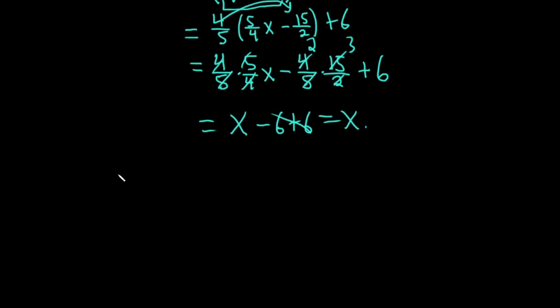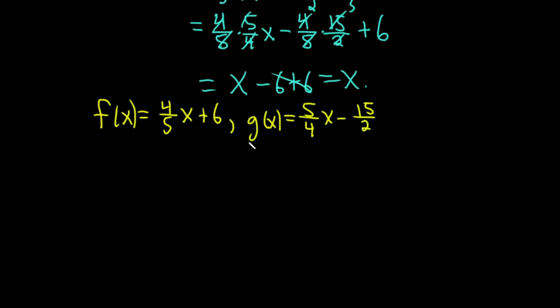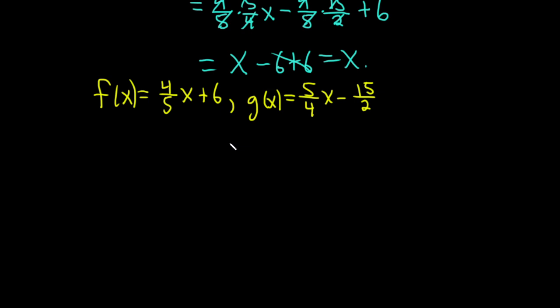I'm going to go ahead and write down the functions again. So we have them here on the screen. So we had f of x. And that was equal to 4 fifths x plus 6. And g of x is equal to 5 fourths x minus 15 halves. Alright, so now we're going to check g of f of x. Let's go ahead and do that.